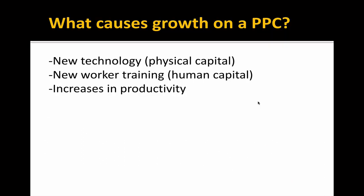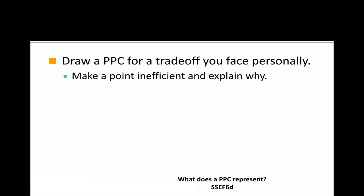What causes growth on a PPC? New technology, new worker training, or increases in productivity. Now I'm going to ask you to draw a PPC for yourself — think about two things that you can measure and produce. If you can't count it, this is not going to be appropriate. Think about maybe meals you can make, dishes you could wash, homework problems you could complete, shelves you could stock, cookies you could bake, nails you could paint, or texts you could send — anything you can measure numerically and produce. Then make a point inefficient and explain why.